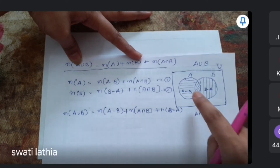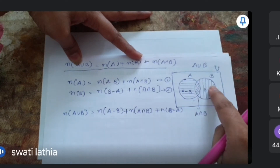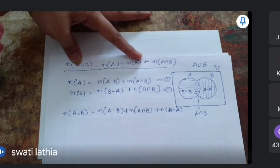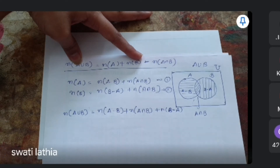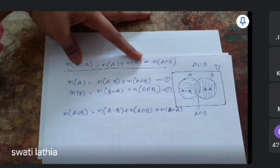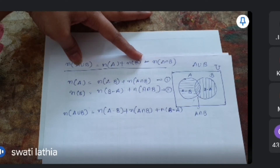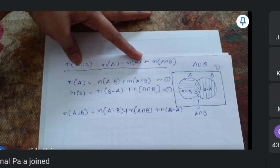આ equation: n(A-B) + n(A∩B) + n(B-A). Mathematics ની અંદર — multiply કરીએ તો divide કરવું પડે, divide કરીએ તો multiply કરવું પડે, subtract કરીએ તો add કરવું પડે — જેથી equation change ન થાય. આ proof લેવાનું છે.